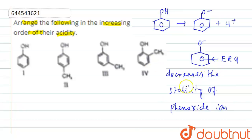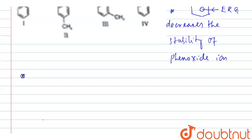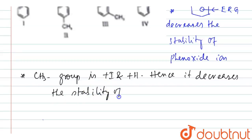Electron releasing groups decrease the stability of phenoxide ion. Here we have a methyl group, which is +I and +H. Hence, it decreases the stability of phenoxide ion, therefore decreasing the acidity of phenol.